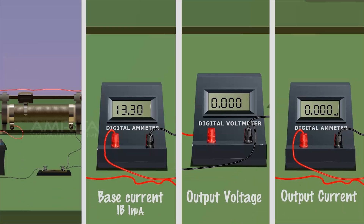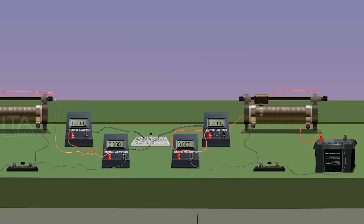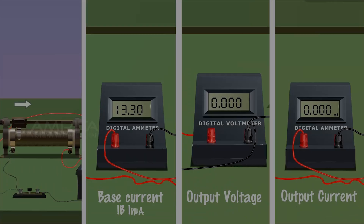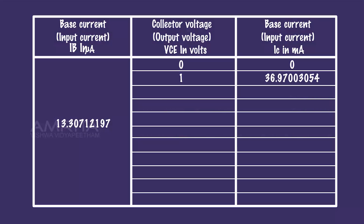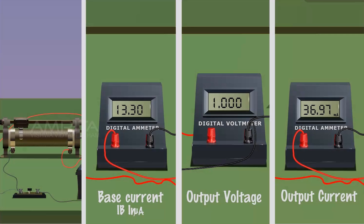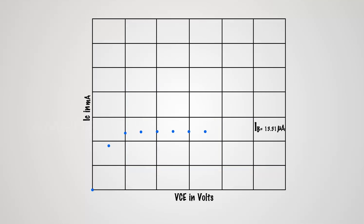Note VCE from the voltmeter V2 and collector current IC from the milliammeter. Record the values in a tabular column. By keeping the base current constant, the collector voltage VCE is increased by adjusting the rheostat RH2. Note the collector voltage VCE and collector current IC. Record the values in the tabular column. Increase the collector voltage VCE by adjusting the rheostat RH2. Repeat the experiment by again increasing the collector voltage. Plot a graph between collector voltage VCE along the x-axis and collector current IC along the y-axis for the constant base current.